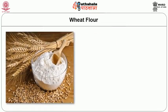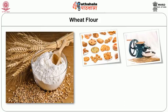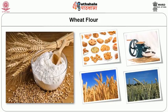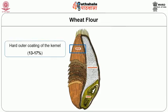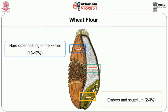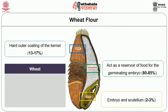Wheat flour is the major structure-forming ingredient in baked products, obtained from the milling of wheat, one of the most important cereal crops in the world. This crop belongs to the genus Triticum of the grass family Gramineae. The wheat kernel is composed of three parts: the outer bran layer, the smaller germ portion including the embryo and scutellum, and the starchy endosperm that acts as a reservoir of food for the germinating embryo. Wheat contains 10 to 13 percent protein, 1.5 to 2 percent fat, ash, and fiber.